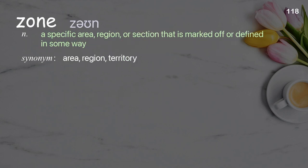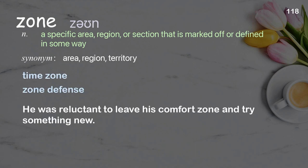Zone: a specific area, region, or section that is marked off or defined in some way. Examples: time zone; zone defense; he was reluctant to leave his comfort zone and try something new.